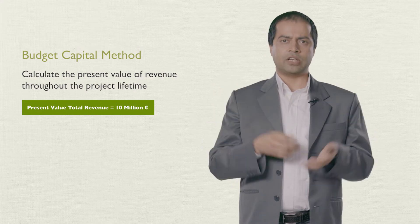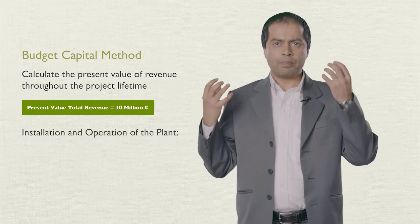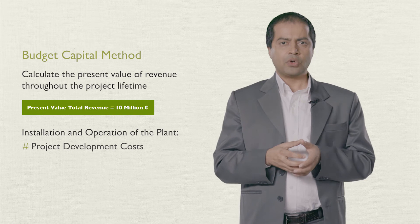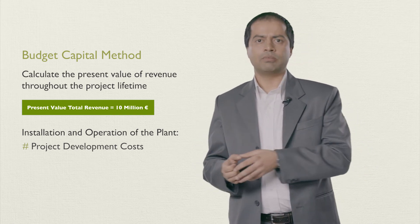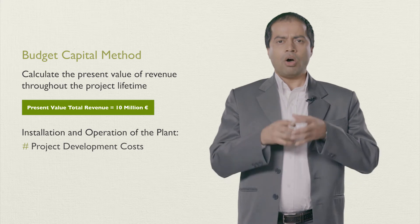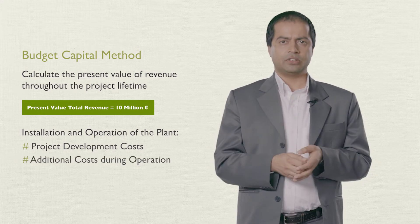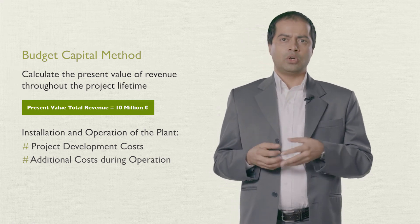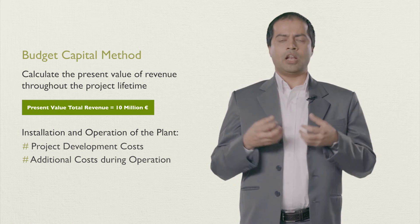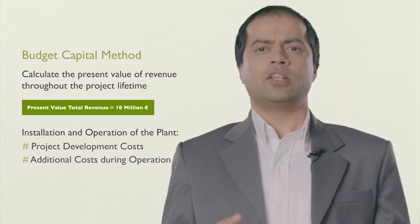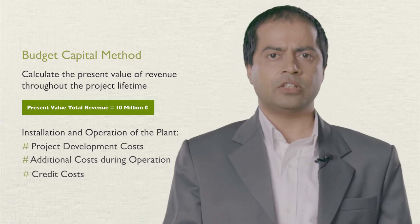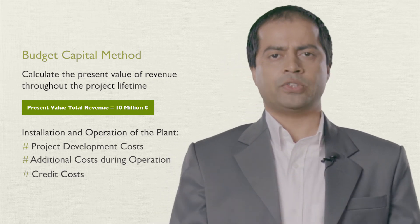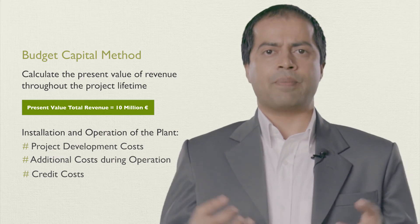Now let's talk about the cost side for the installation and operation of this gasifier power plant. In the beginning, there are project development costs, equipment purchase and installation costs, and some other direct and indirect costs. Also during the operation, there are additional costs such as staff salary, repair and maintenance costs, and so on. We are assuming that the rice husk is available for free. Furthermore, there might be other costs such as bank interest rates if a loan has to be borrowed. At the cost side as well, the present value of total project cost can be calculated.